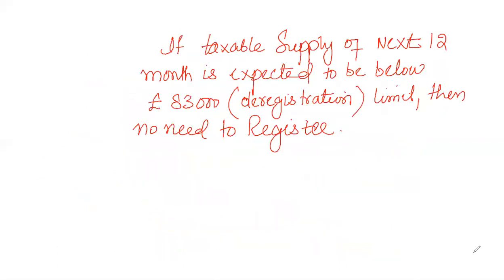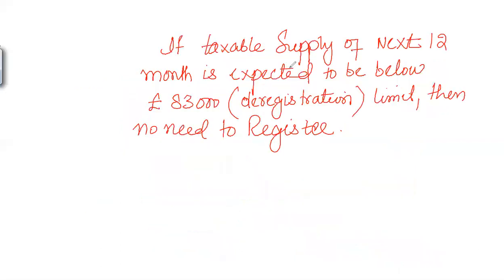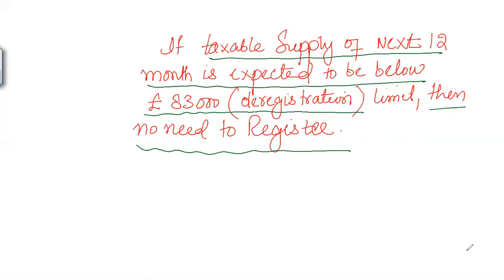One additional point about the historical test: even if the threshold has been exceeded and the test passed, you may still not need to register if you expect that the next 12 months' taxable supply will be below the deregistration limit of £83,000. In that case, compulsory registration is not required. You may opt for voluntary registration, but compulsory registration is not needed. So under the historical test, you look back 12 months and then look forward 12 months before deciding whether registration is required.